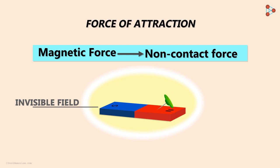We cannot see this field but it exists. This field is produced by a magnet and hence it's called a magnetic field.